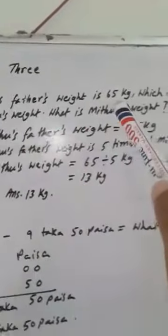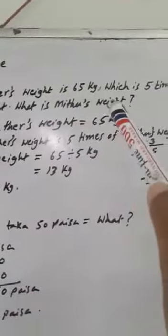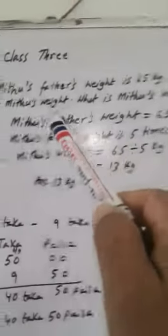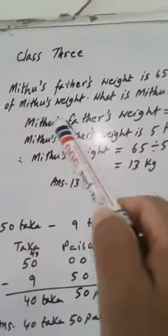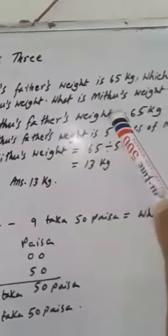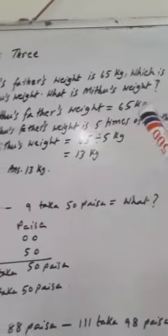Mithu's father's weight is 65 kg, which is 5 times Mithu's weight. What is Mithu's weight?